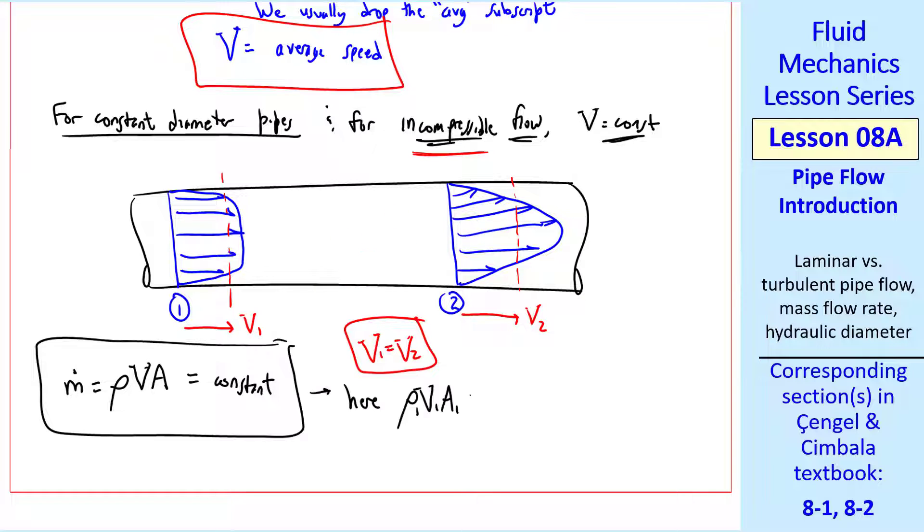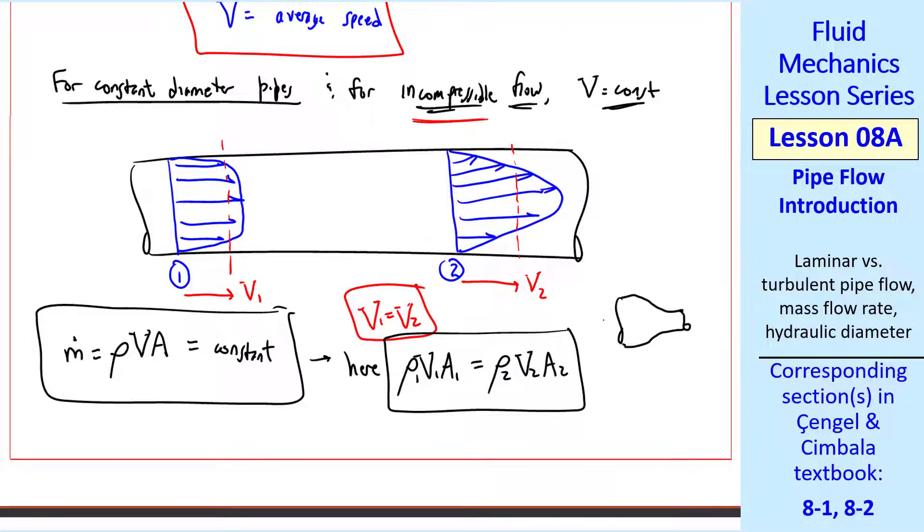Of course the mass flow rate has to be constant through a pipe even if the diameter is changing by conservation of mass. And even if it's compressible, we could write rho 1 V1 A1 equal rho 2 V2 A2. So you can see that if it's incompressible, the densities are the same. And if it's constant diameter pipe, the areas are the same. And that's why V1 equal V2. If there's a change in diameter, the average speed will change, but this equation has to still hold.